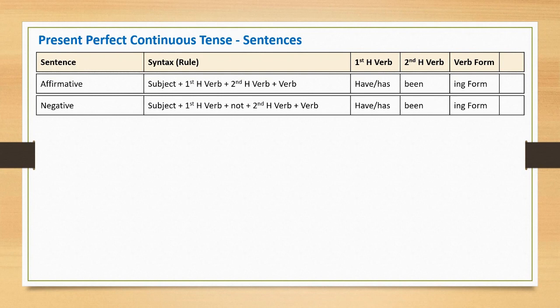A present perfect continuous negative sentence is a negative or pessimistic statement. It begins with subject, followed by first helping verb, the pessimistic word 'not', second helping verb, and the ING form of the main verb.